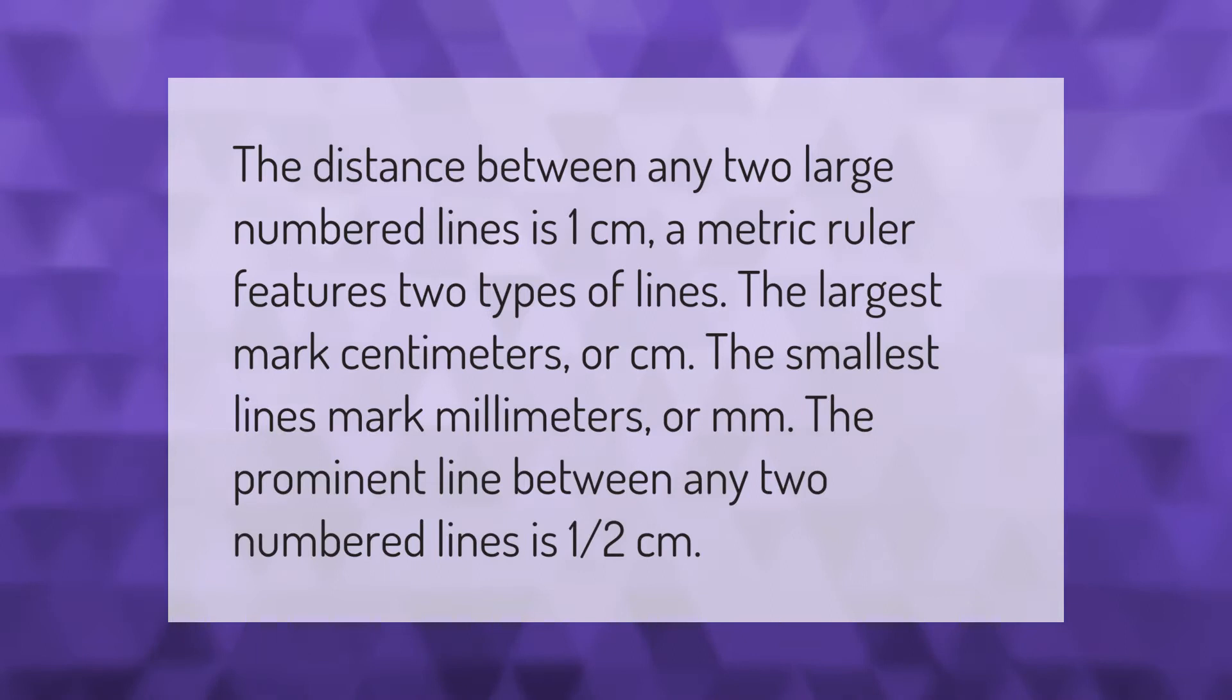The distance between any two large numbered lines is one centimeter. A metric ruler features two types of lines: the largest mark centimeters, or cm, and the smallest lines mark millimeters, or mm.